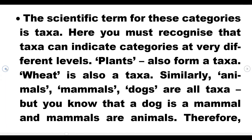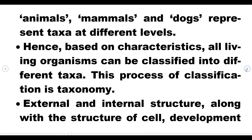The scientific term for these categories is taxa — taxa is plural, and taxon is singular. You must recognize that taxa can indicate categories at very different levels. Plants form a taxa, wheat is also a taxa, but they are at different levels. Similarly, animals, mammals, and dogs are all taxa, but a dog is a mammal and mammals are animals, so they represent taxa at different levels. Based on characteristics, all living organisms can be classified into different taxa — and this process of classification is taxonomy.